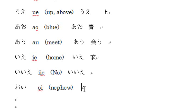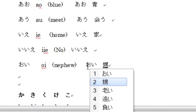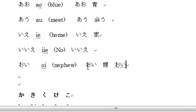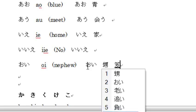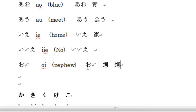Last few words. 'Oi' (おい) is typed 'o' then 'i', and it means nephew. If you want the kanji for 'oi', type 'o' and 'i' then press the space key. Number 2 is the kanji for nephew. If you look at other options, number 3 means 'to get old' and another means 'to lose'. The correct kanji for nephew is number 2.